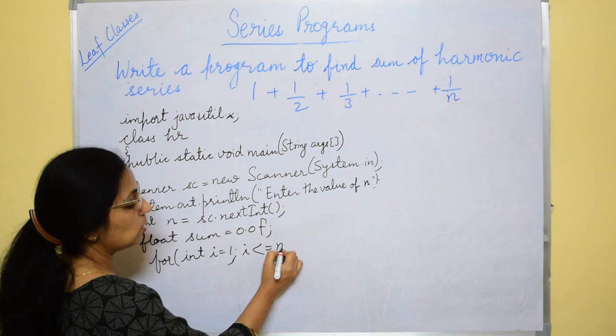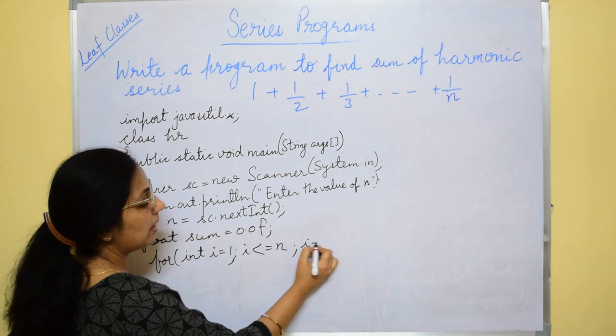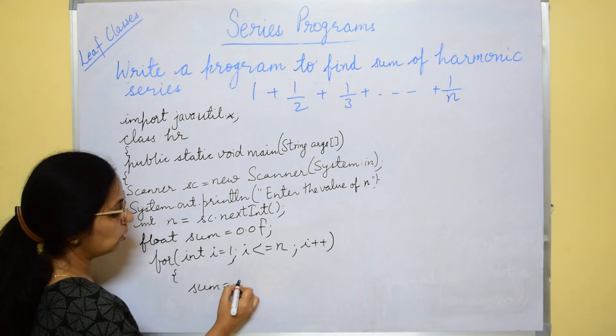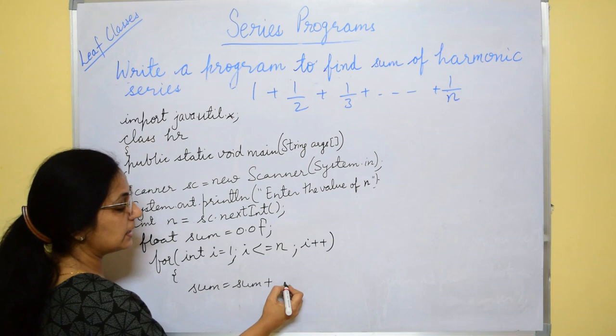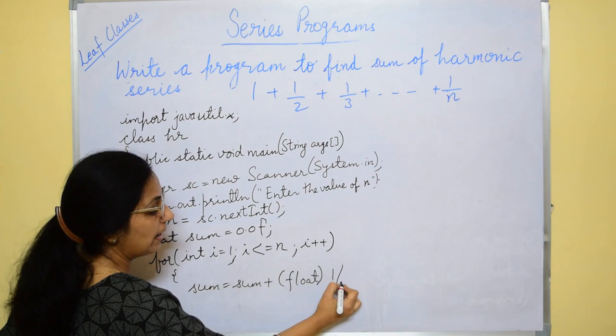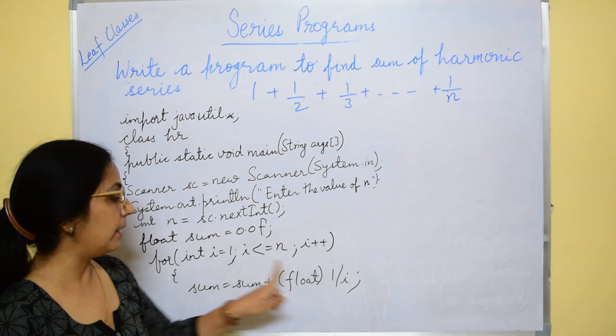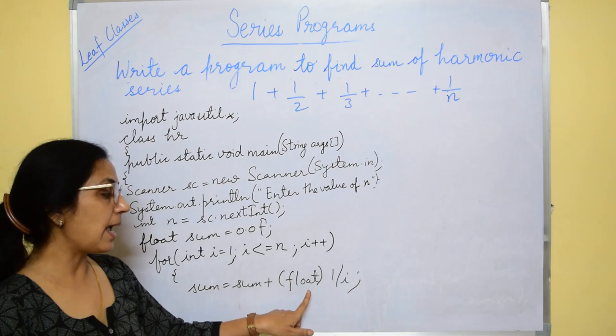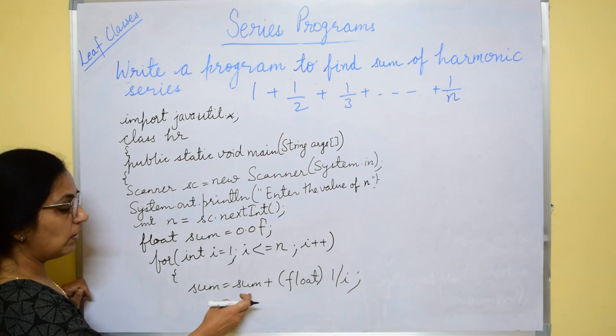Then we will take the loop int i equals to 1. This loop is for the denominator 1, 2, 3, 4. So i less than equals to n, i plus plus and after that you will say sum equals to sum plus each term we will calculate here. So that calculation will be float type 1 by i. So 1 by i first time it will be 1 by 1. Second time 1 by 2.